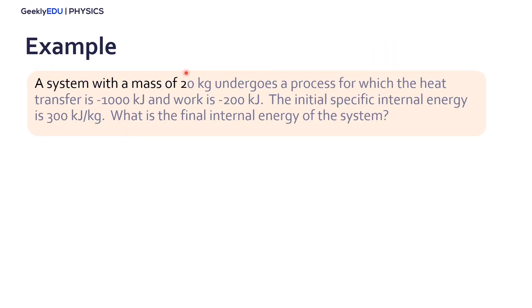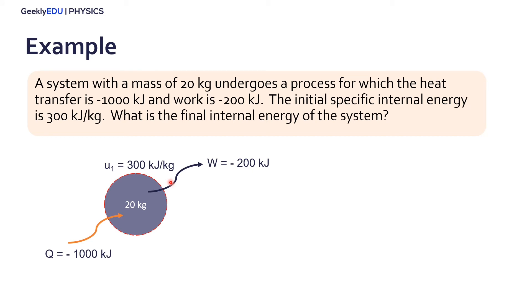So let's go through this example here. We have a system with a mass of 20 kilograms that undergoes a process for which the heat transfer is negative 1000 kilojoules and work is negative 200 kilojoules. So the initial specific internal energy is 300 kilojoules per kilogram. So what is the final internal energy of the system? So let's sketch the system here, the problem. We have a system of 20 kilograms, the initial internal energy, specific internal energy is 300 kilojoules per kilogram, and we have two negative energies here. So we have a negative heat transfer, which means it's going in the system from outside to the inside and negative work, which means it's going from the system to the outside of the system.